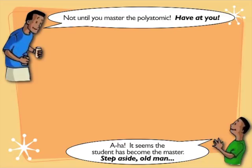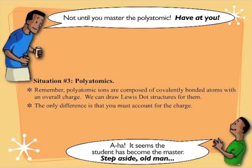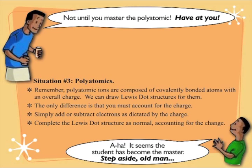You'll often see resonance structures in polyatomics. Polyatomics are covalently bonded atoms that, as a whole, have decided to gain or lose electrons. You draw them just like any other Lewis dot structure, but now you have to account for charge — which is very easy to do. If it has a negative charge, throw in some extra electrons; if it has a positive charge, take some electrons away. When you're done, put the whole thing in brackets and indicate the charge on the outside. Just don't forget the brackets and the charge.